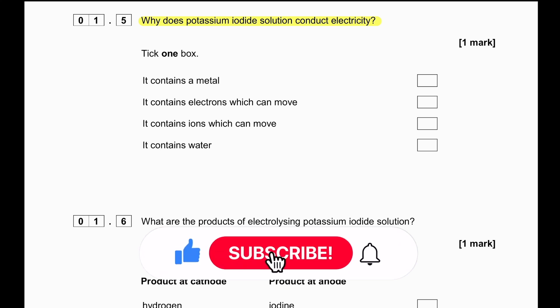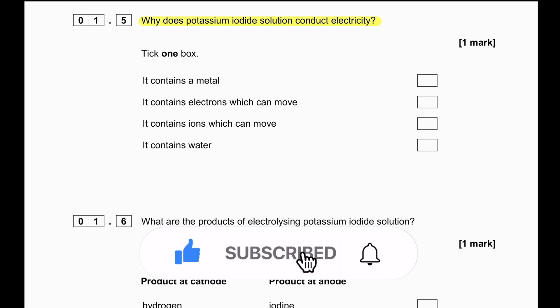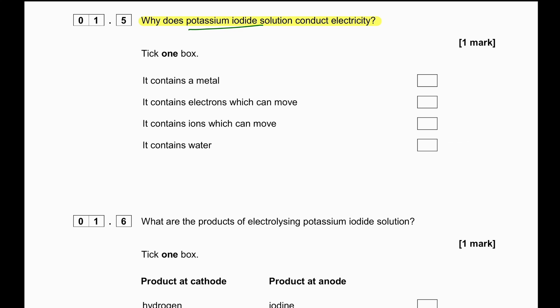Why does potassium iodide solution conduct electricity? Potassium iodide solution is an ionic solution, so it contains aqueous potassium ions and aqueous iodide ions. Ions can conduct electricity. Options like 'it contains a metal' or 'it contains electrodes which can move' are incorrect. The correct answer is: it contains ions which can move.